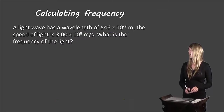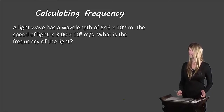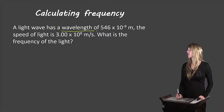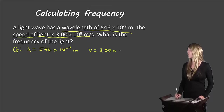Now let's look at calculating frequency. A light wave has a wavelength of 546 times 10 to the minus 9 meters. The speed of light is 3.00 times 10 to the 8 meters per second. What is the frequency of light? For our givens, the wavelength is 546 times 10 to the minus 9 meters, and the speed is 3.00 times 10 to the 8 meters per second.